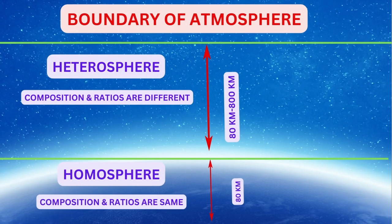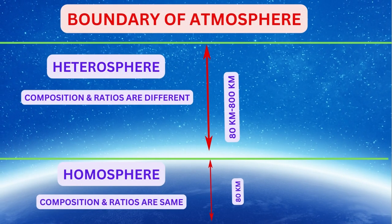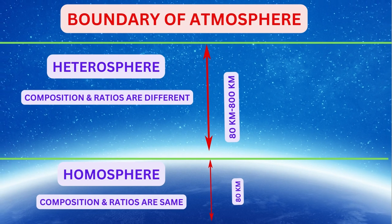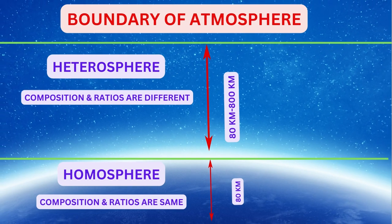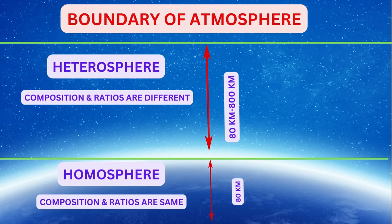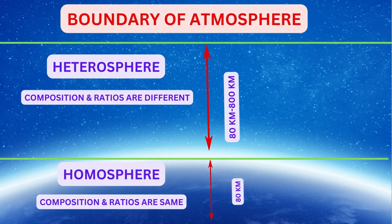Atmosphere up to 80 km is called homosphere and above 80 km it is called heterosphere. As the name suggests, the composition of atmosphere is homogeneous below 80 km and heterogeneous above 80 km.